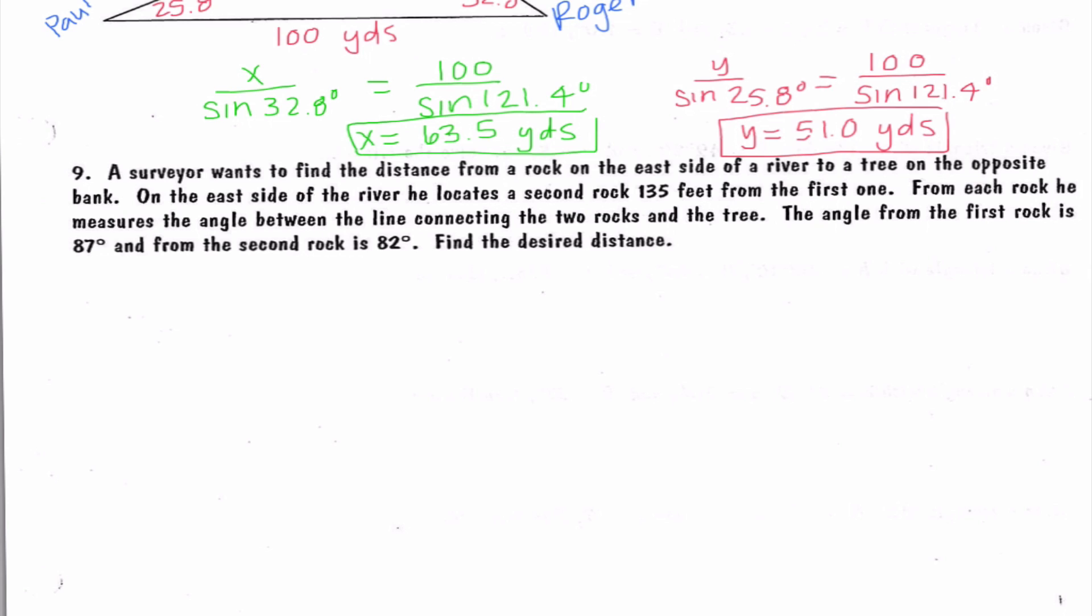It says a surveyor wants to find the distance from a rock on the east side of the river to a tree on the opposite bank. On the east side of the river, he locates a second rock 135 feet away from the first one. From each rock, he measures the angle between the line connecting the two rocks and the tree. The angle from the first rock is 87 degrees and the angle from the second rock is 82 degrees. Find the desired distance.